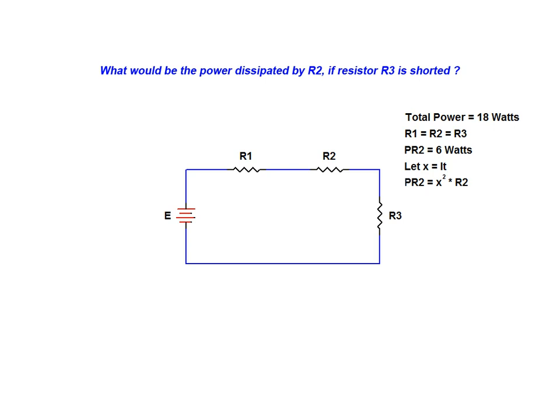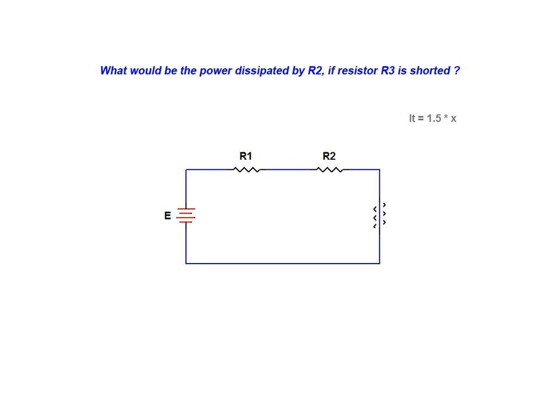We will now turn to examining the circuit with resistor R3 being shorted. With resistor R3 shorted, the total resistance of the circuit is now only two-thirds of its original value. As resistance and current are inversely proportional, with two-thirds resistance the circuit current is now 3 over 2 times what it was under normal conditions — that is, 1.5 times greater than it was under normal conditions.